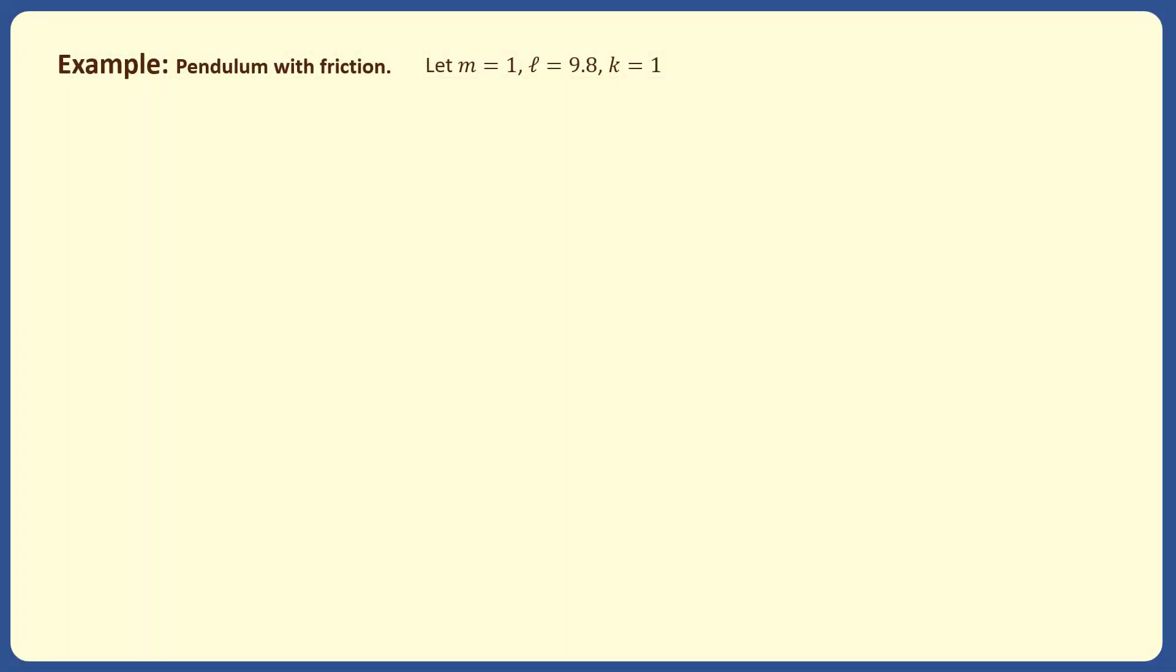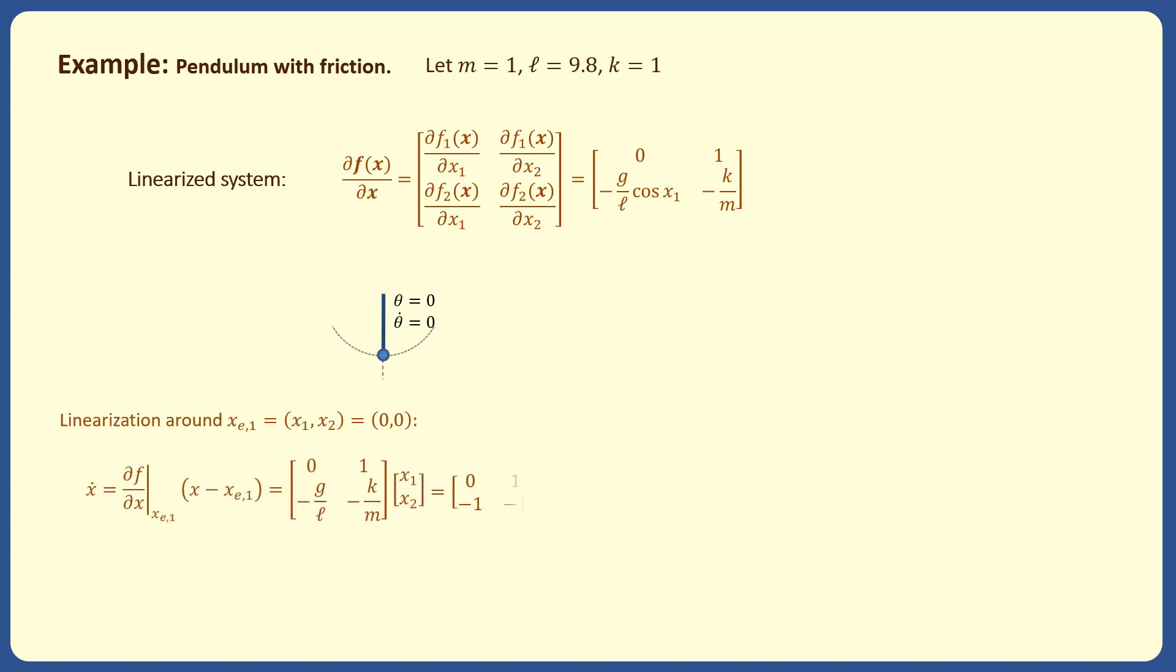Consider the pendulum example and remember from the linearization lecture that the Jacobian matrix is in this form. If we linearize the system around the origin, then the matrix A has two eigenvalues with real parts equal to minus 0.5. So, the equilibrium is locally exponentially stable.